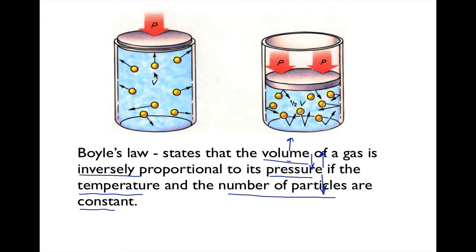If we look at a container and we can see the molecules — if we have a lid at the top — as we decrease the volume by pushing down on that lid, pressure is going to go up. We're compressing all these little molecules into a smaller space, so they're going to be colliding more and creating more pressure inside the bottle.